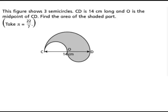Now we will see how to do this sum. It says this figure shows three semicircles. We'll see where it is. Now the first one is this, and you can see the second one is here.